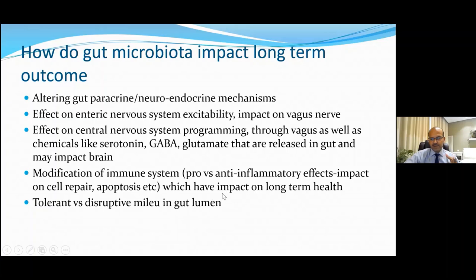Inflammatory bowel disease may happen if balance is disturbed. In the newborn period, we're talking about colic, where there is excess inflammation or reduced tolerance. This tolerant versus disruptive milieu is a result of the gut microbiota. Through its central nervous system effects, eating behaviors, satiety, and stress hormone levels are impacted — which is why there is a higher risk of diabetes, obesity, and an indirect effect on heart disease.